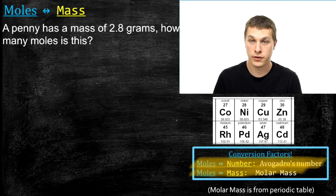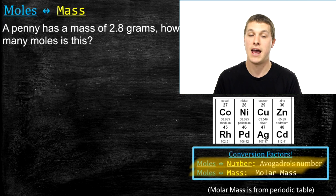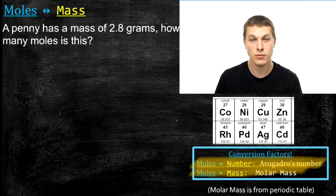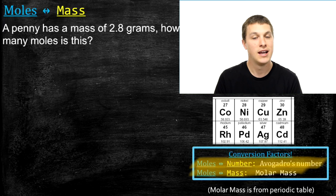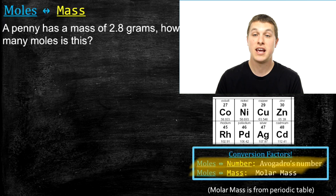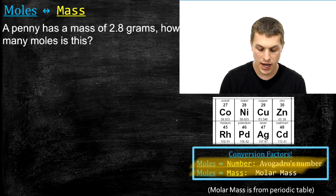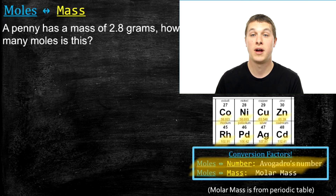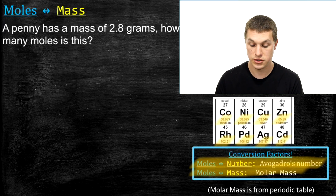Molar mass turns out to be different for different elements. Avogadro's number is always 6.02 times 10 to the 23rd, but molar mass depends on how heavy an element is. If I have a dozen copper atoms, which is a relatively heavy atom, it's going to be way heavier than a dozen hydrogen atoms. Similarly, a mole of those things weighs different amounts based on how heavy the atoms are. The periodic table is where we find molar mass — below each element, the molar mass of that element is listed.